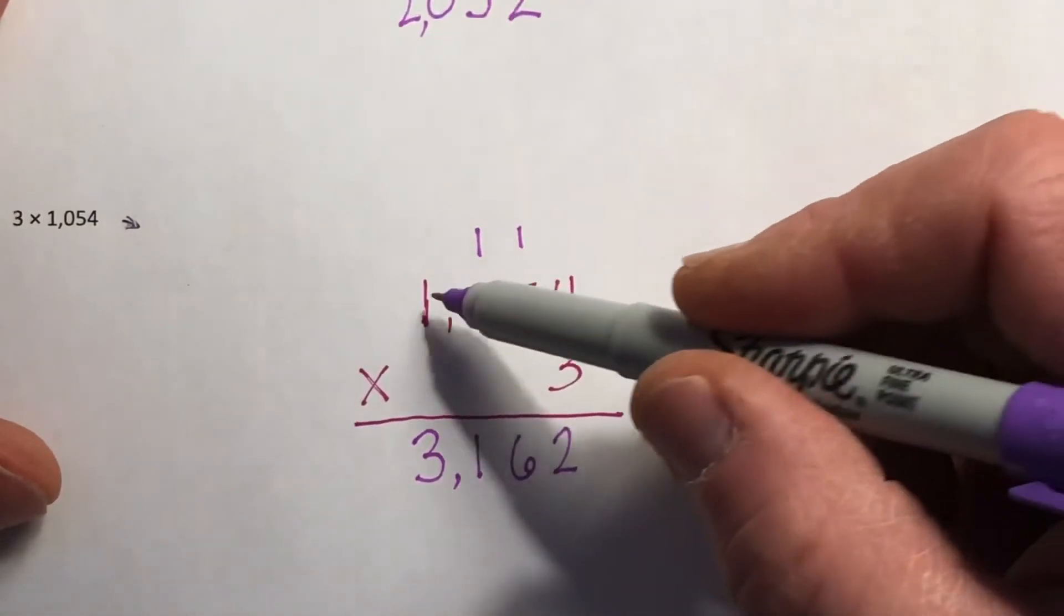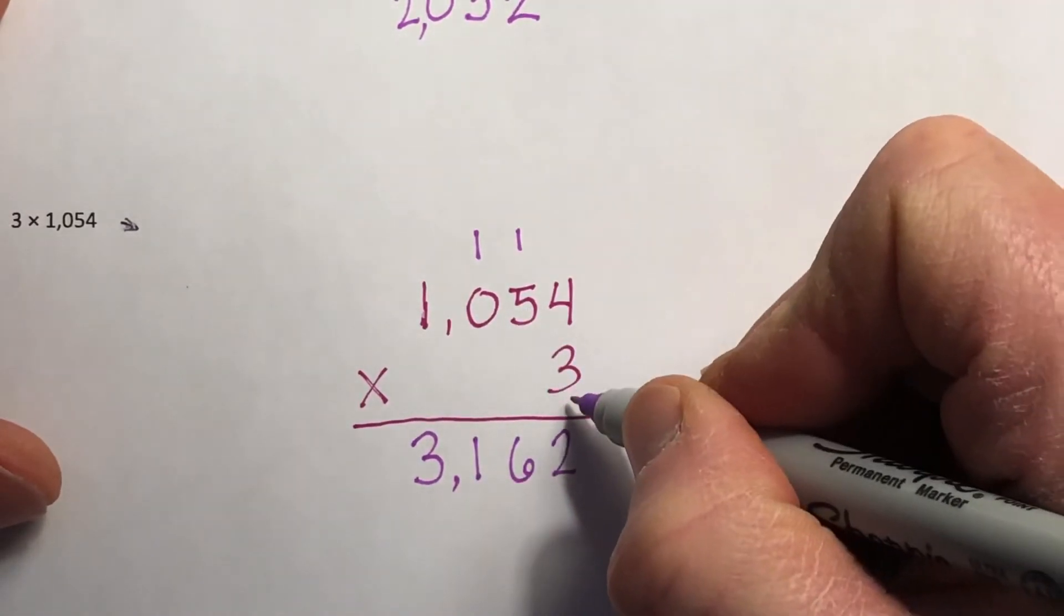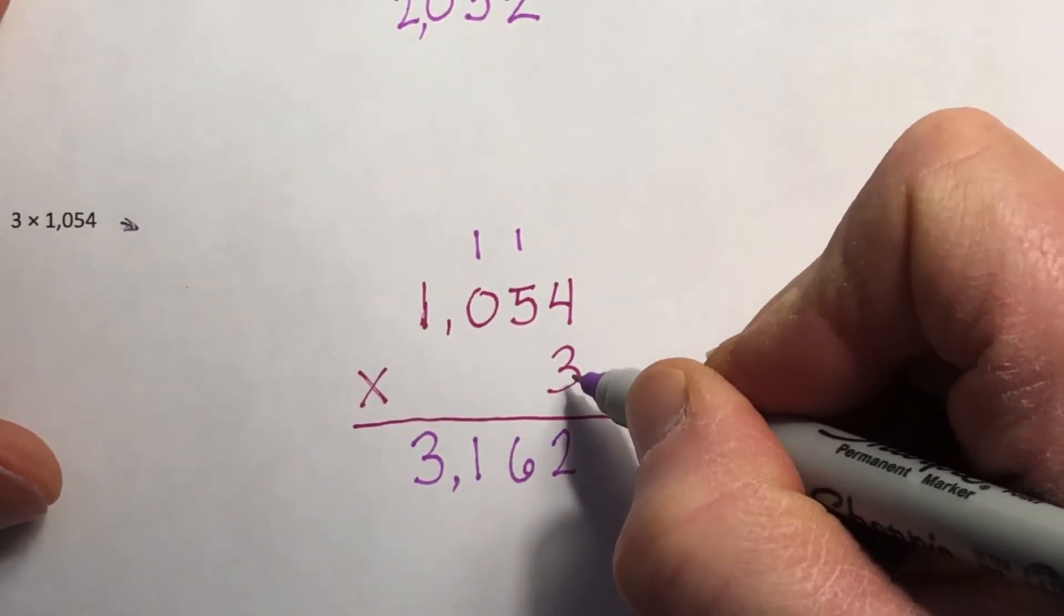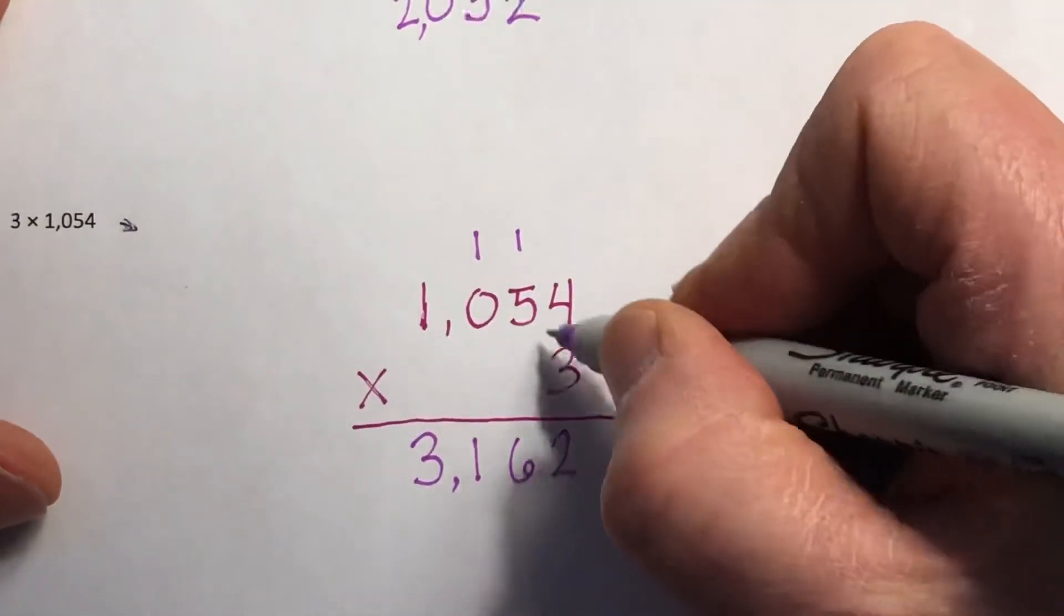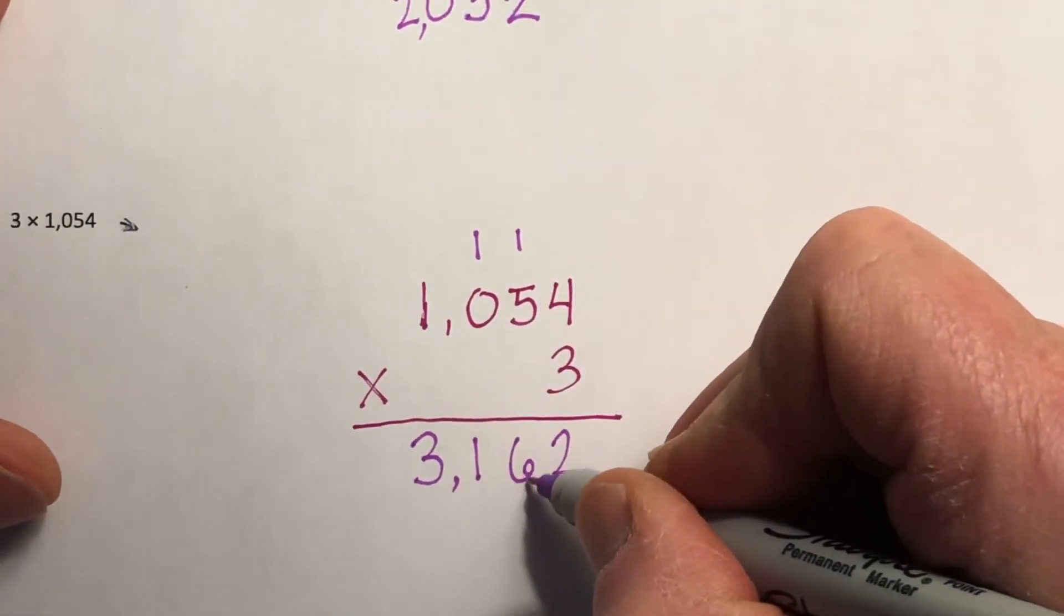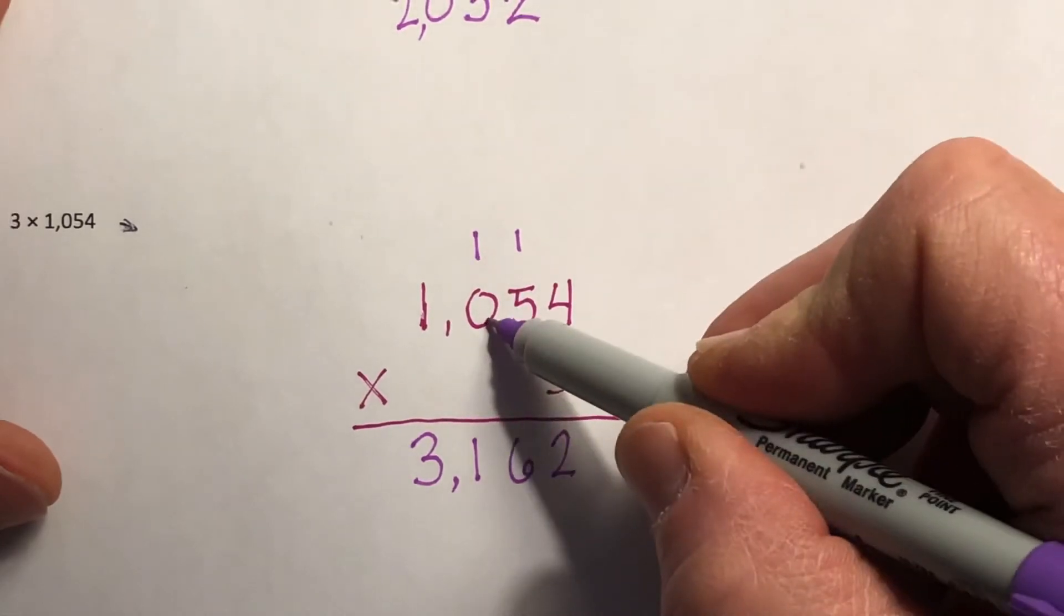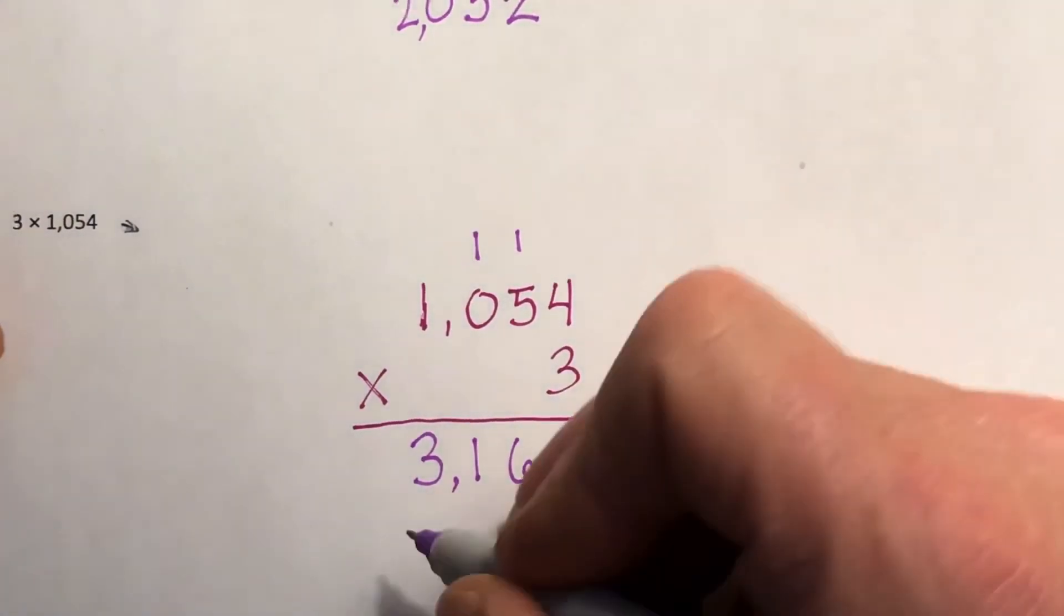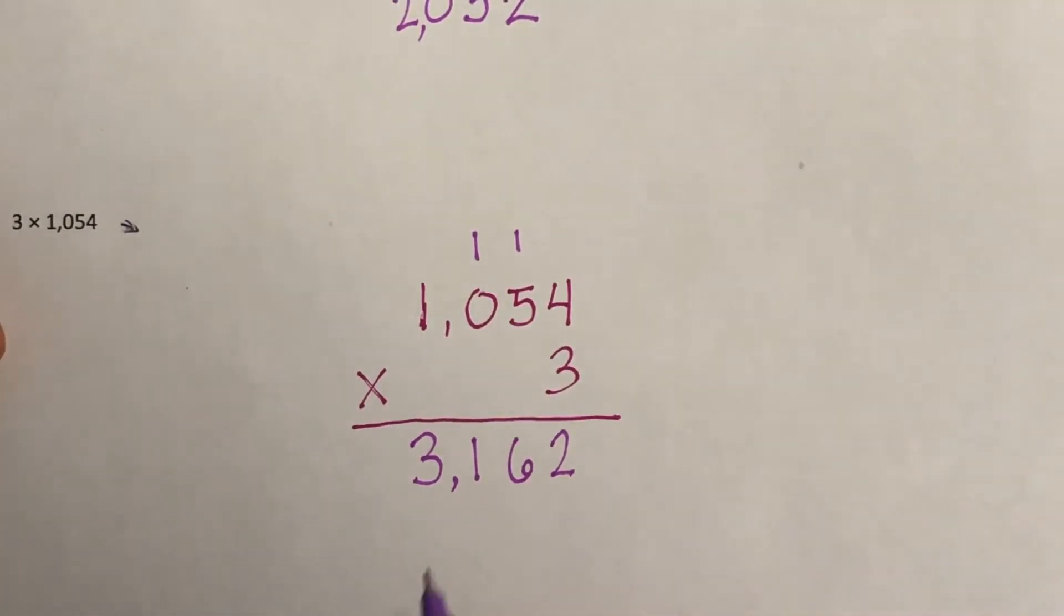Down here, it's 3 times 1,054, so I wrote it just like this, my 3 right down here. So 3 times 4 is 12, put down the 2, carry the 1. 5 times 3 is 15 plus 1 is 16. I put down my 6 right here and carried the 1. 3 times 0 is 0 plus 1, that's 1. And 3 times 1 is 3, so I end up with 3,162.